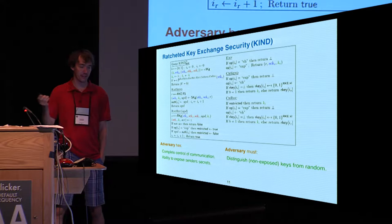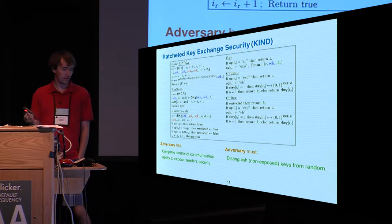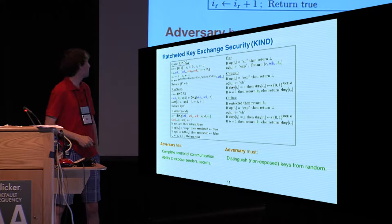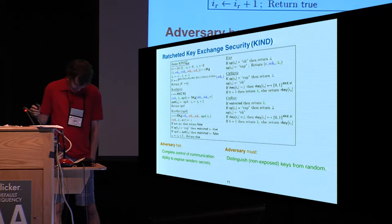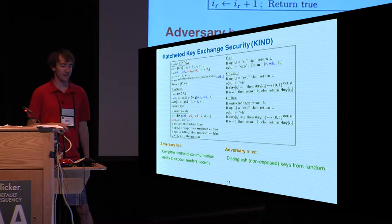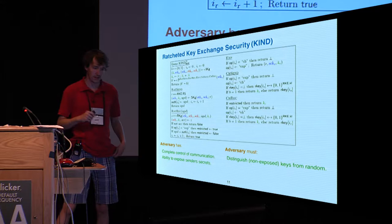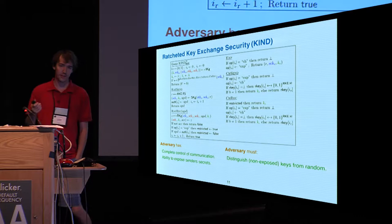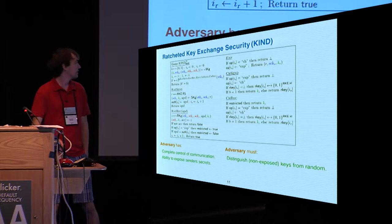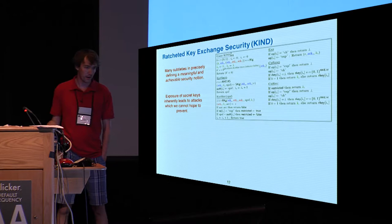So we give a definition of key indistinguishability of what the security we're hoping for is. In this model, we think of the adversary as having complete adversarial control of the communication, which is represented by a ratchet sending and ratchet receiving oracle. In addition to that, it's at any time allowed to ask to have the secret stored by the sender exposed to it, given by an expose oracle. Given these different powers, the goal of the adversary then is to distinguish the keys that were produced by the protocol from truly random strings. And those are given by the challenge receiver and challenge sender oracle.